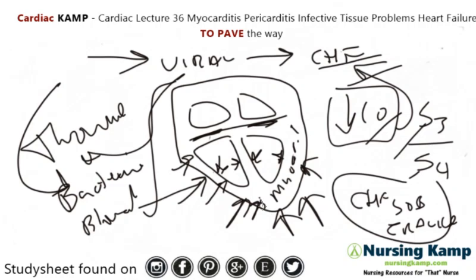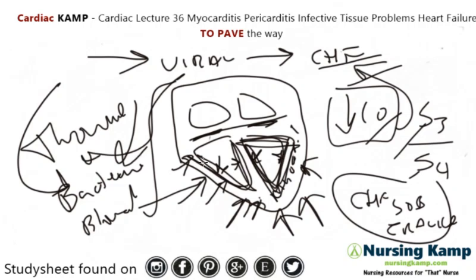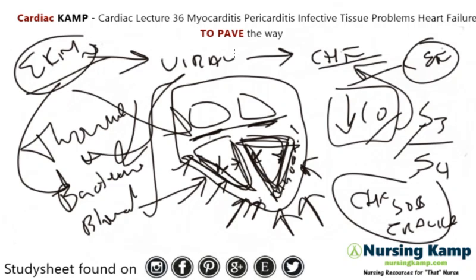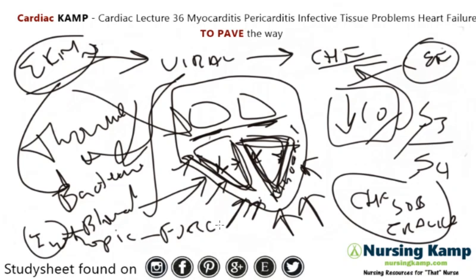With myocarditis, you treat the underlying cause. Sometimes these patients need strong medications to pump the heart because they can develop a very low ejection fraction. They'll get an echo to see how much damage there is to the heart, and they may receive inotropic medications. Bed rest is essential because these patients are really winded, short of breath, and acutely ill.